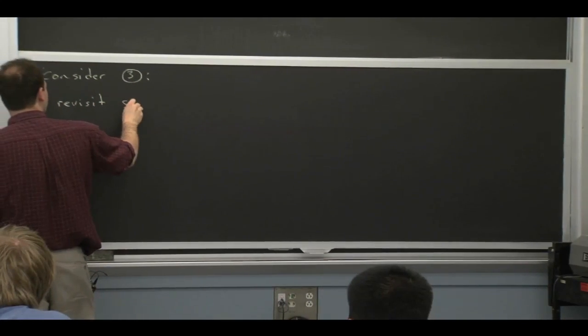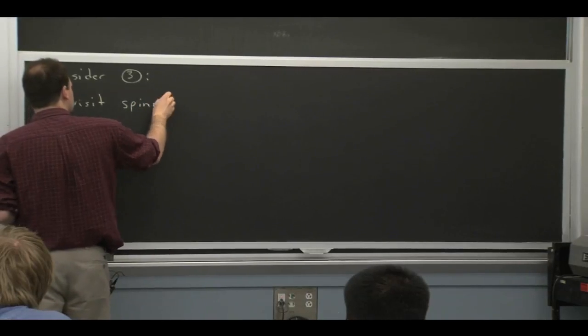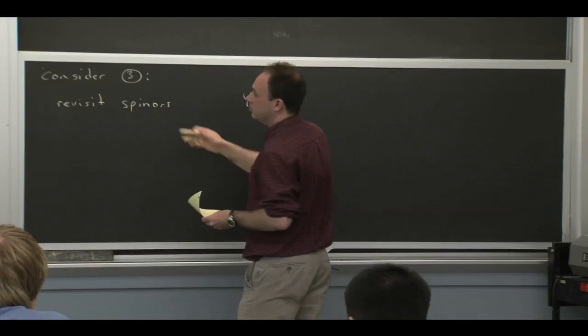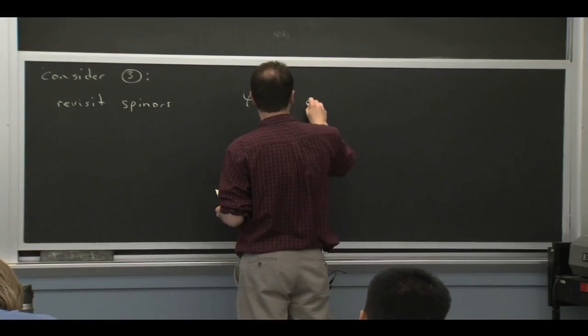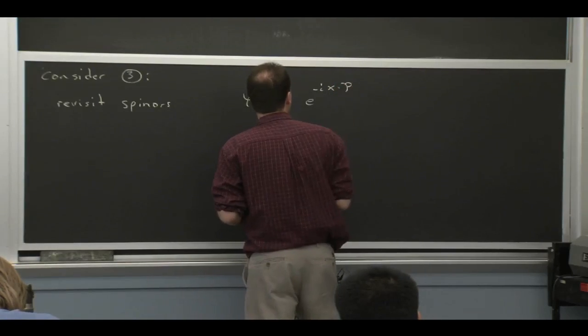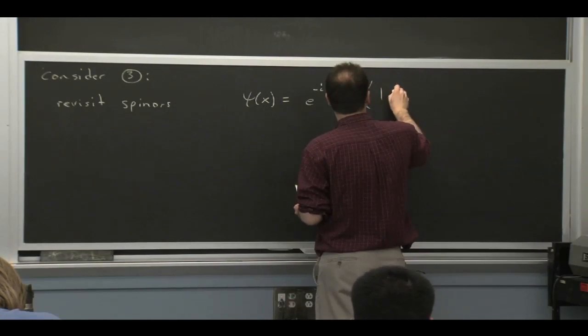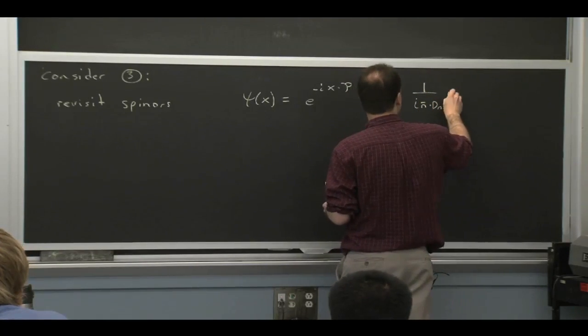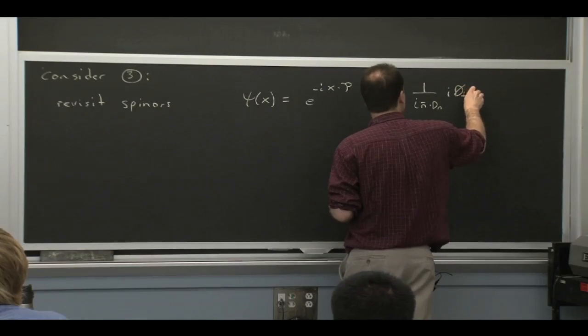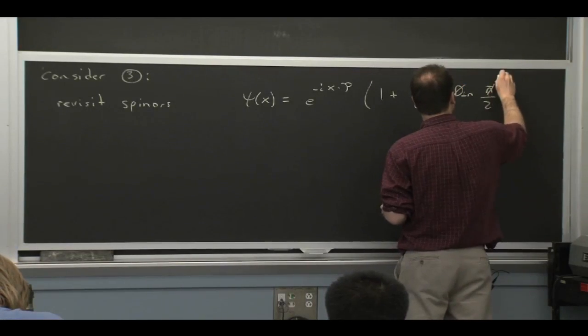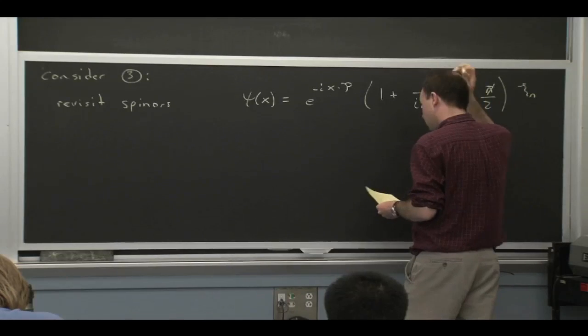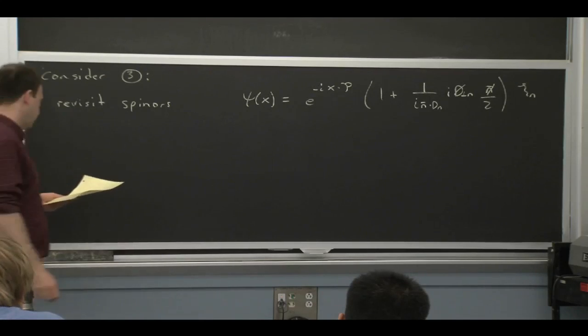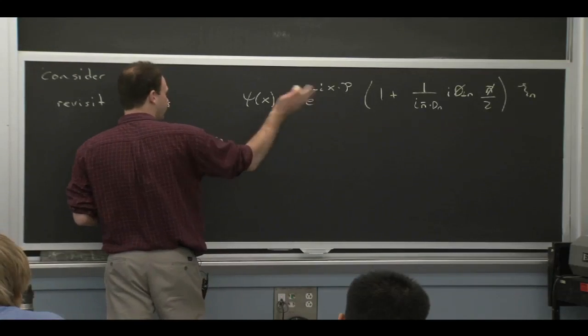If I put together the information that we talked about when we derived the equation at the top of the board there for the Lagrangian, we worked out at tree level, we have this formula that relates the fields. From that formula, if we just project onto the spinner pieces, we can write down a formula that relates the spinners.